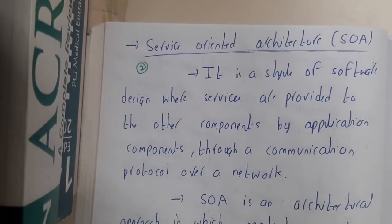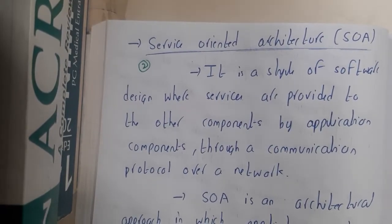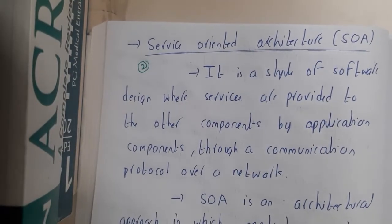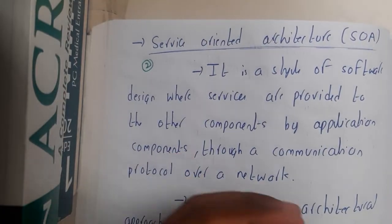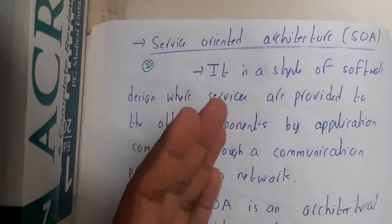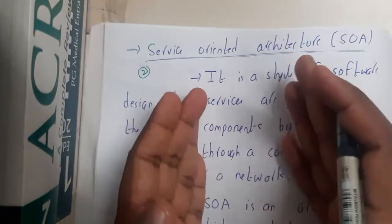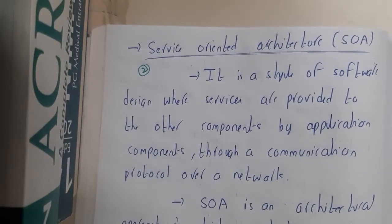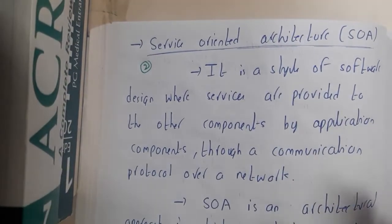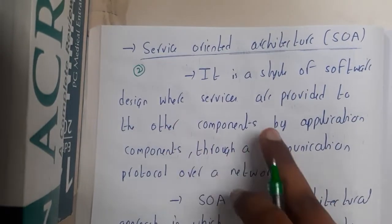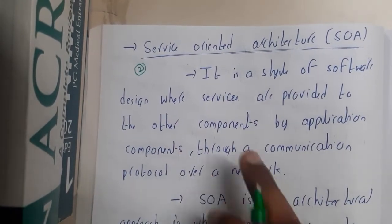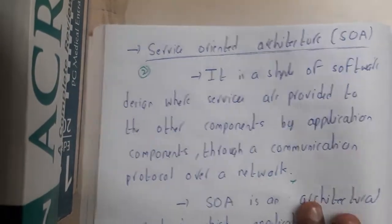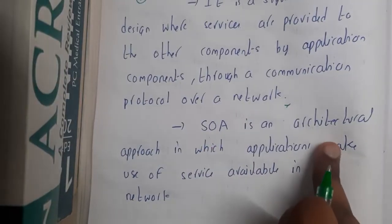Welcome back. In this lecture, let us go through Service-Oriented Architecture. SOA looks interesting because you will be requesting for something and getting it from your service provider. This is a method where you request and get the response of the item you want. It is a style of software design where services are provided to other components through a communication protocol over the internet. Request and response is the core concept here.